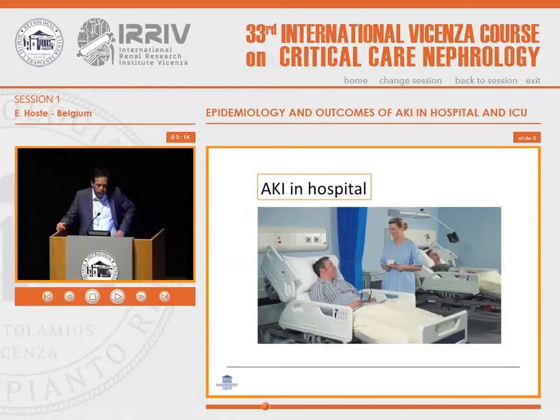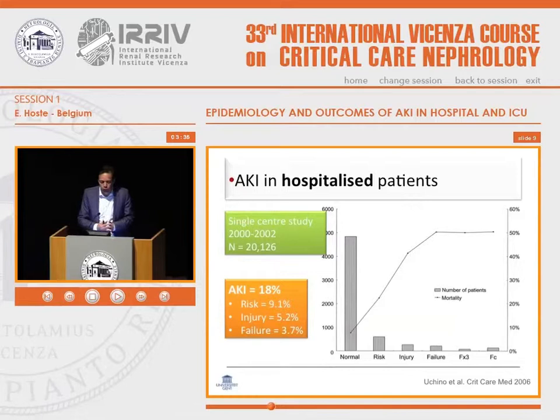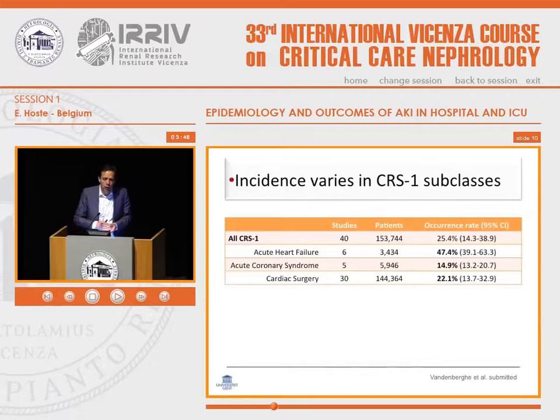Location makes a huge difference — whether a patient is hospitalized or is an ICU patient. A hospitalized patient has an AKI incidence of about 1 in 5; 18% in a study from Shigeru Chino in Australia. But 80% of patients admitted to the emergency room had acute kidney injury. Of course, there's a huge variation depending on the underlying disease.